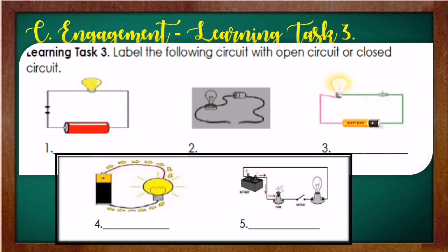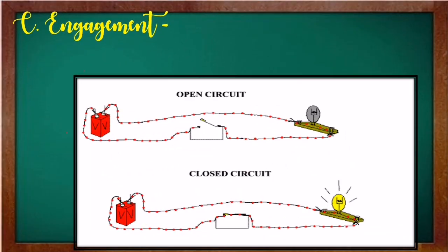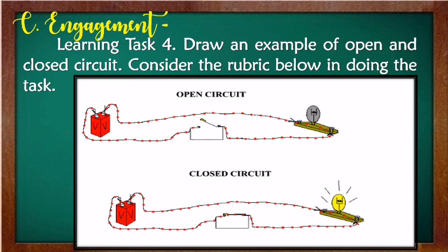And this is your learning task number three. Label the following circuit with open or closed circuit. You just write, open, or closed circuit here on the blocks. And this is your learning task number four. Draw an example of open and closed circuit. Consider the rubric below in doing the task. The rubric is in your learner's pocket. So, you just draw an example of open circuit and closed circuit.